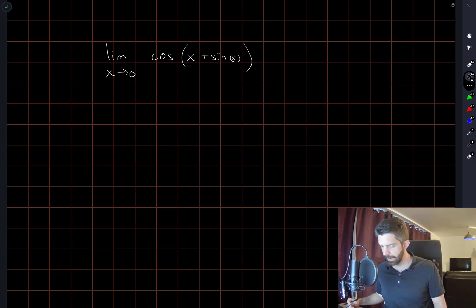I mean, I guess everything is continuous, right? X is continuous, sine x is continuous, and cosine of its argument is continuous.